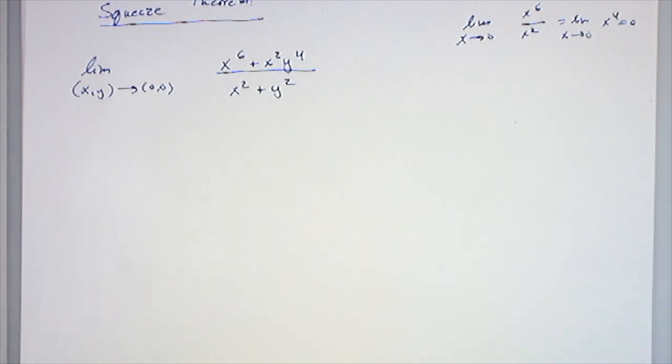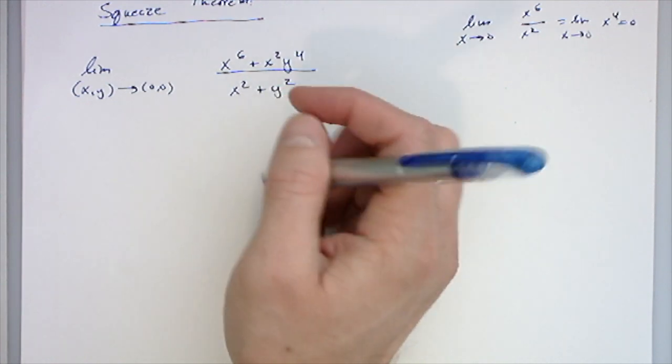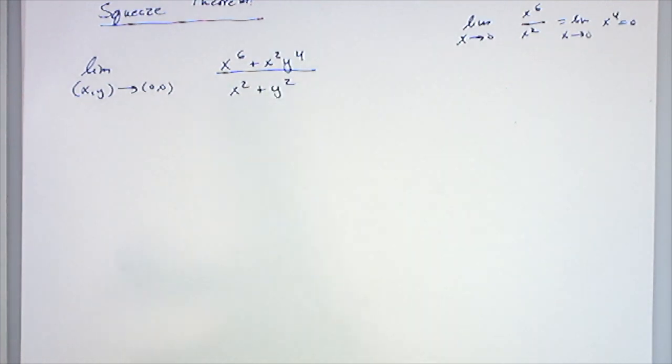So for the squeeze theorem type thing, you're usually looking for something with an x squared plus y squared. That's usually going to make things, it's going to be something we want. So I know that x squared plus y squared is always... oh, holy smokes, my pen just burst on me.